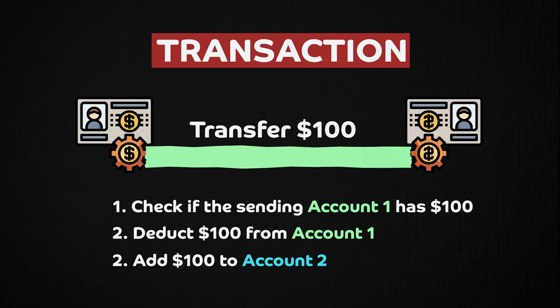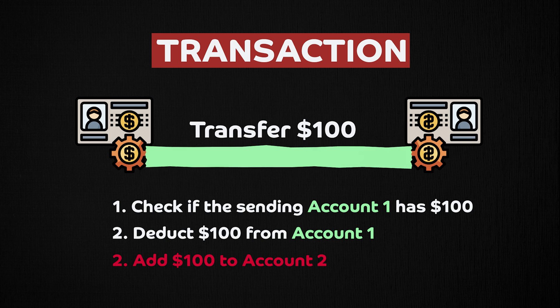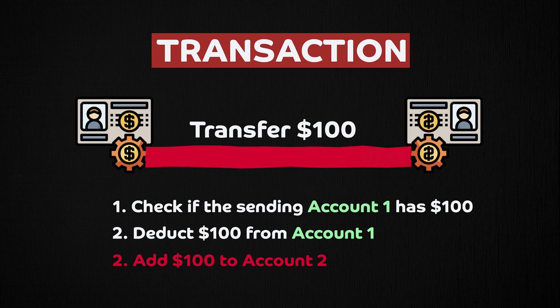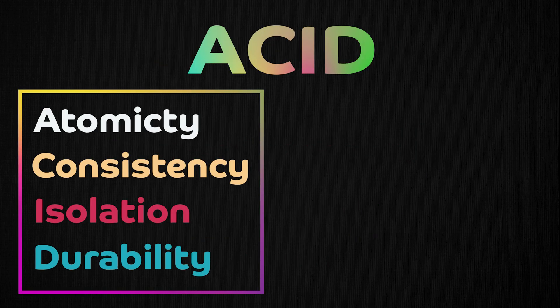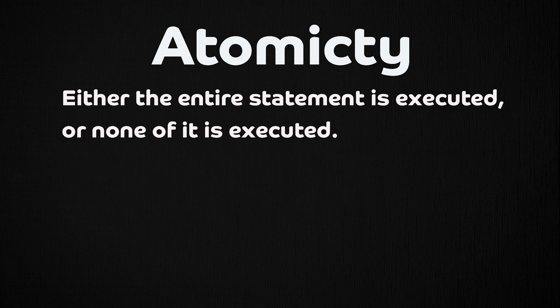For example, if adding $100 to account two fails, the entire transaction will fail. And that is the meaning of the first property of ACID — atomicity — which says the entire transaction must finish, or you revert the database to an old state.